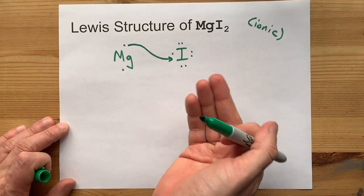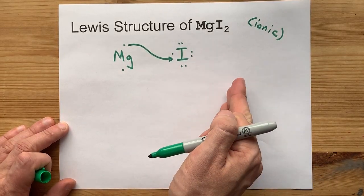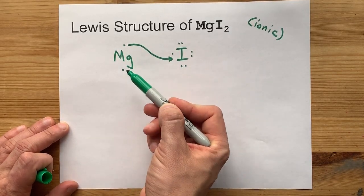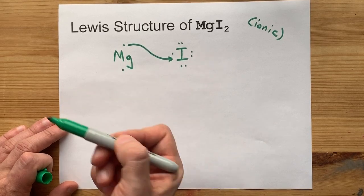So magnesium as a metal will gladly give it an electron. Now, the iodine is stable and happy with eight electrons in its outer shell. But magnesium is unhappy. It still has one extra electron.